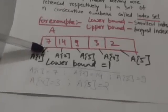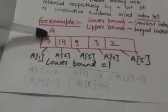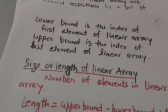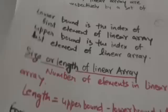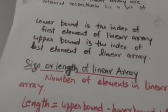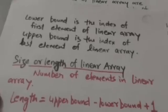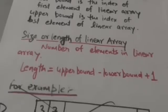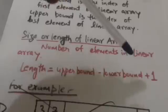Lower bound is the index of the first element of a linear array, and upper bound is the index of the last element of a linear array. The number of elements in a linear array is called the size or length of that linear array. If a linear array has 10 elements, then its size or length is 10. The length of a linear array is equal to upper bound minus lower bound plus 1.